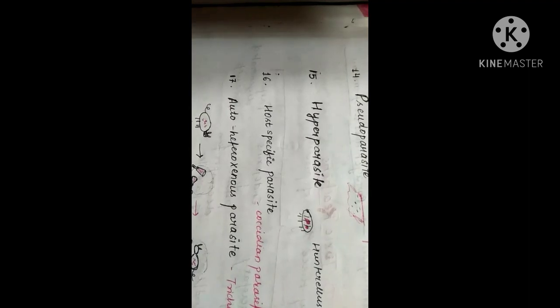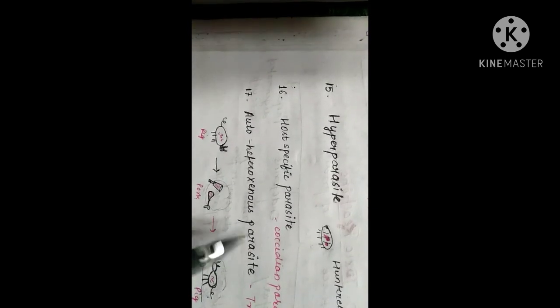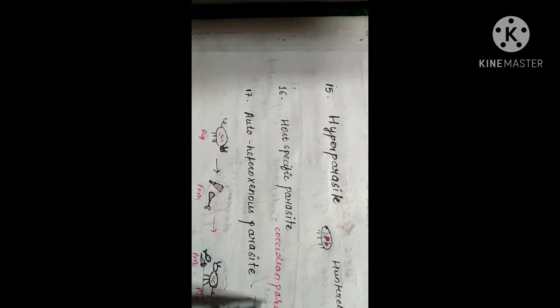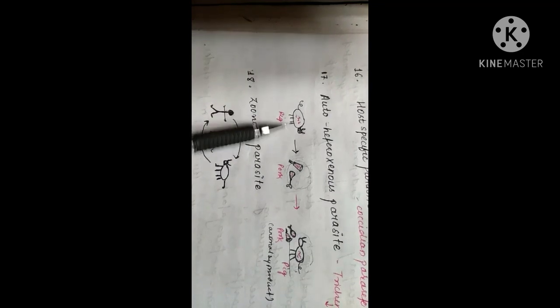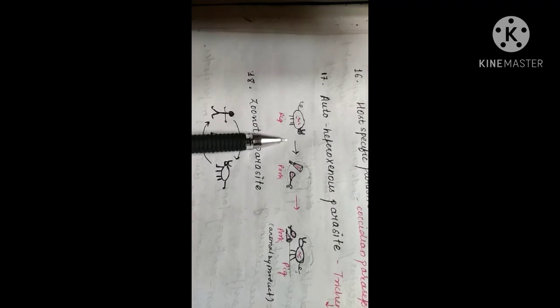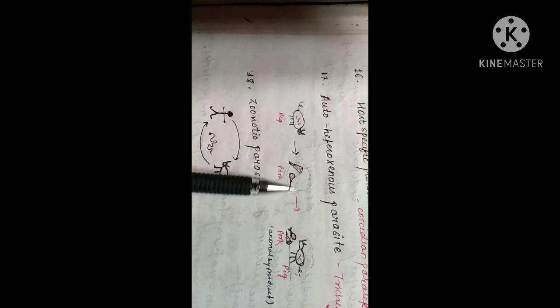The next is host-specific parasite. Host-specific parasites are those parasites which are specific to a particular host and can affect only a particular species. For example, coccidian parasites, which are specific to poultry. Next comes the autoheteroxenous parasite, where a single host acts as a definitive host for one generation and can also act as an intermediate host for a susceptible host.